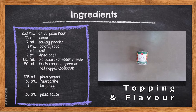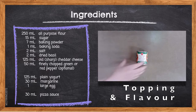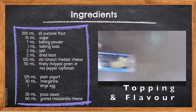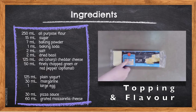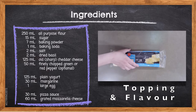30 milliliters pizza sauce — pizza sauce is typically an uncooked tomato sauce made up of pureed tomatoes seasoned with salt, pepper, and other Italian herbs such as garlic, oregano, and basil. It is easier to spread on pizza, but in this case on the tops of the muffins. 60 milliliters grated mozzarella cheese — mozzarella is known for its mild flavor, stringy texture, and super melting ability, making it popular as a topping on pizza or pizza muffins.